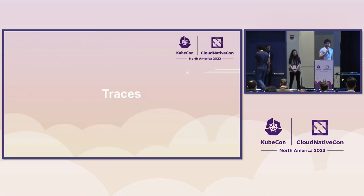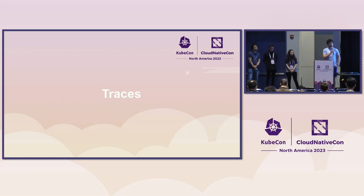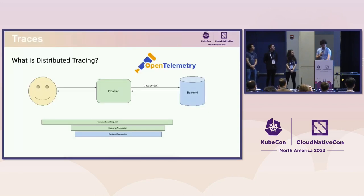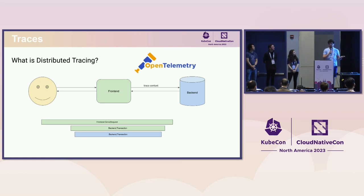Next is David talking about tracing in Kubernetes. Metrics and logs have been around in Kubernetes for quite a while, but tracing is relatively new. Distributed tracing is a way to emit telemetry from multiple different applications and combine them back together to get a picture of what happened to a single request along the way — for example, a user request to a frontend that requires a request to a backend.